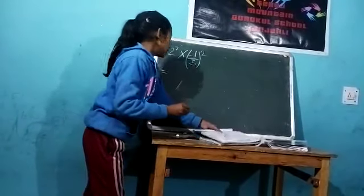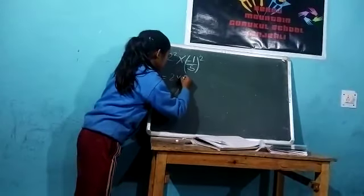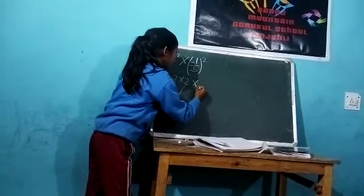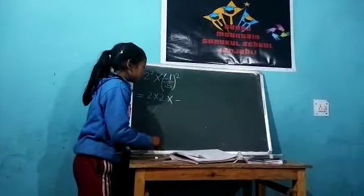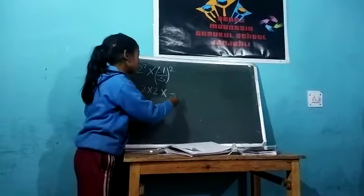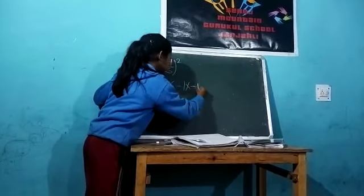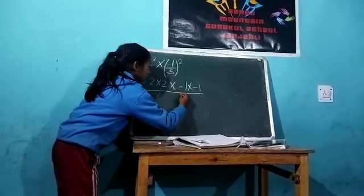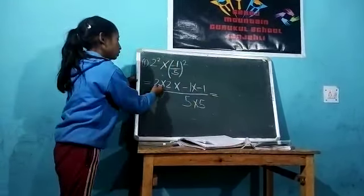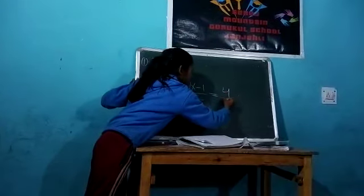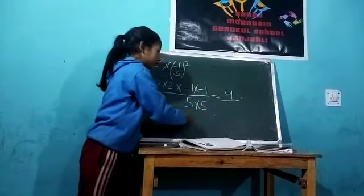To solve it, here is 2 raised to power 2, so we will write 2 two times. Multiply minus — we again write minus 1 two times, because here we have power 2, upon 5. So this is equal to: 2 multiplied by 2 is 4, upon 5 multiplied by 5 is 25.